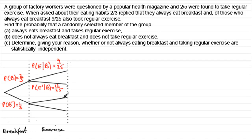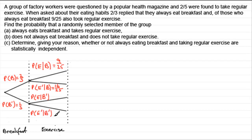The next branch would be the probability of taking exercise given that you didn't have breakfast, and below that the probability of not taking exercise given that you didn't have breakfast. We don't know either of these yet, but as soon as we get one of them, we'll have the other because we can just take it away from one.